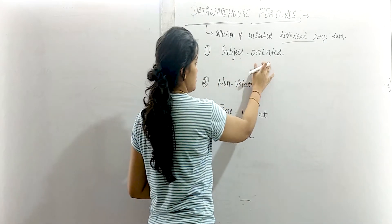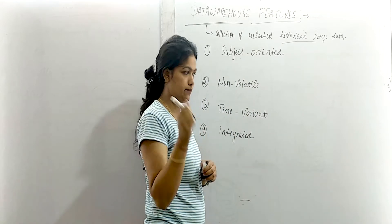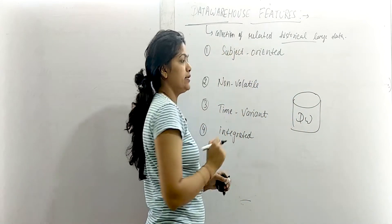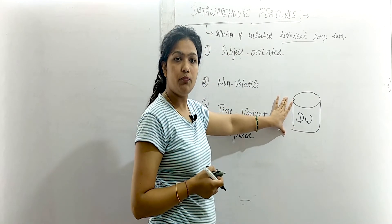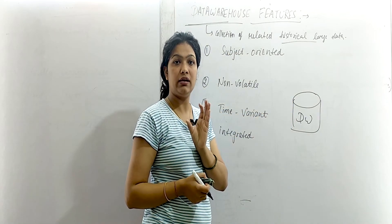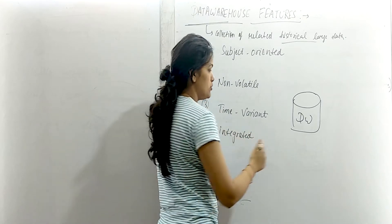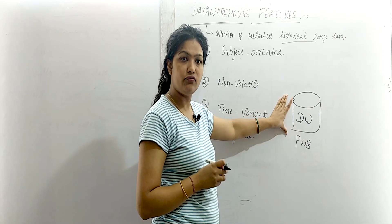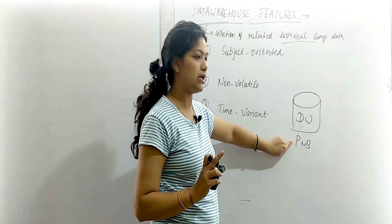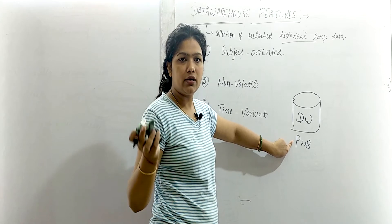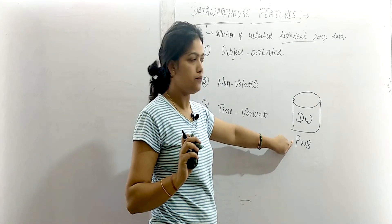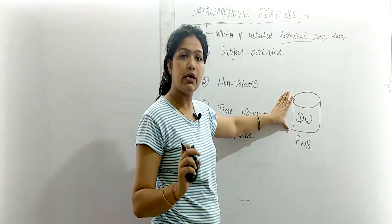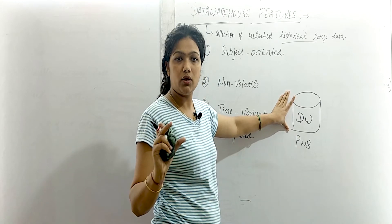The first feature is subject oriented. Suppose we are making a data warehouse — subject oriented means that this data warehouse should be related to a particular subject only. For example, if this is the data warehouse of PNB bank, then subject oriented means this data warehouse will have all the information related to PNB bank only, not about any trade reservation or university website. The particular database will have all the information related to a particular enterprise or company only.